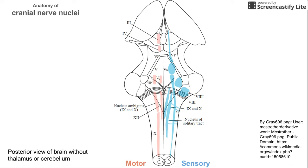It's also important to discuss what cranial nerve nuclei are. They're essentially places where the cranial nerves synapse before going out or coming into deeper parts of the brain — collections of cell bodies where these cranial nerves synapse.